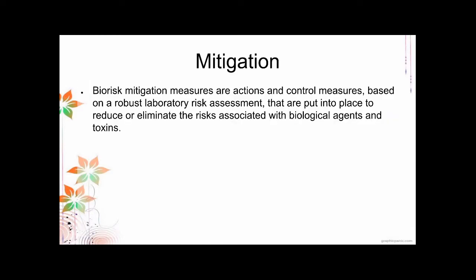The next part of the AMP model is Mitigation. Biorisk mitigation measures are actions and control measures based on a robust laboratory risk assessment that are put in place to reduce or eliminate the risk associated with biological agents and toxins. For example, if you assess that doing Ebola research with your current laboratory state is high risk — high probability because you lack proper biosafety cabinets — but you still want to do the research, you create procedures and actions to lessen the probability or even lessen the impact.